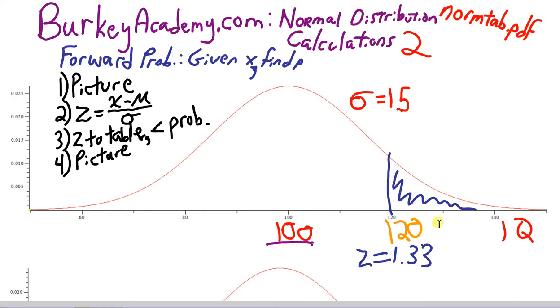Given some number, here we're looking at IQ with a mean of 100 and a standard deviation of 15, given an IQ like 120, what we did in the last video is I showed you how to calculate the probability that someone would have an IQ bigger than 120.